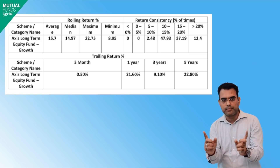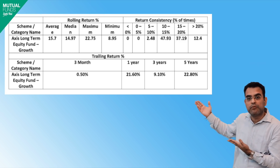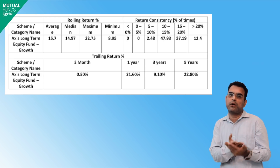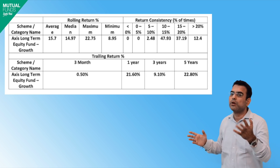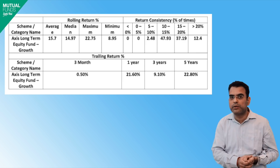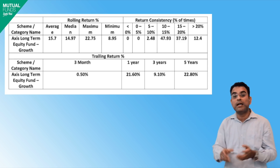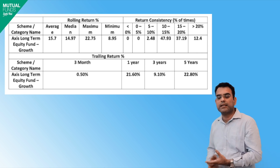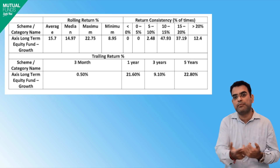Waheen, isi example mein neeche humne trailing return dikhaya hai — is fund ka normal return pattern. Woh hume dikhata hai ki ek saal mein fund ki return 21.60% hai, jabki teen saal mein woh 9.10% hai. Doston, hum hamesha mutual fund mein long term ke liye paisa lagate hain, aur rolling return basis pe yeh zyada accurate ho sakta hai. Paanch saal mein hamari return 22% rahi hai. Zyaadatar log 5 saal aur 3 saal ki return ko consider karte hue fund ka selection karte hain.